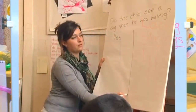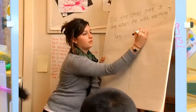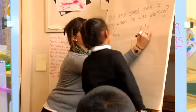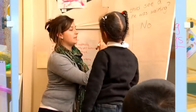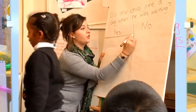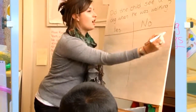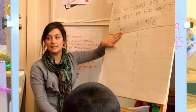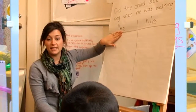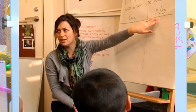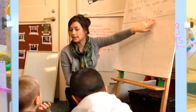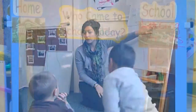Adults can provide daily opportunities for children to engage in this process. For example, your answer is either yes, the child did see a dog, or no, the child did not see a dog.